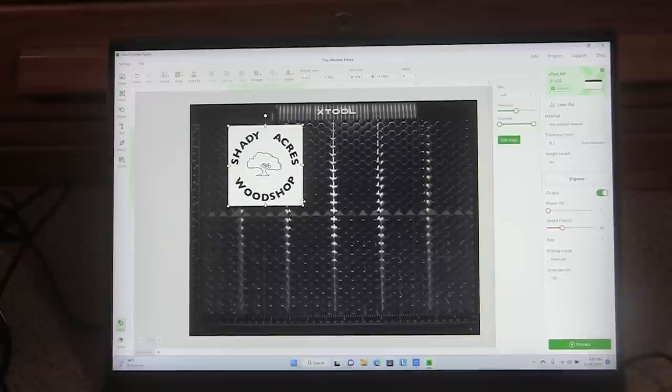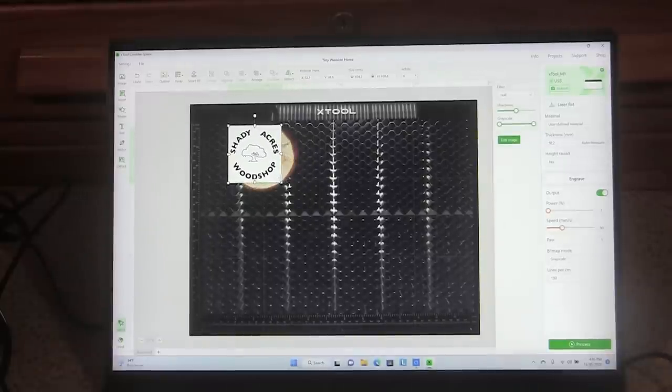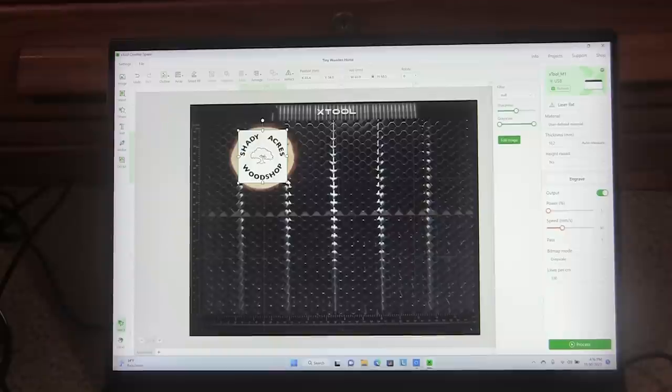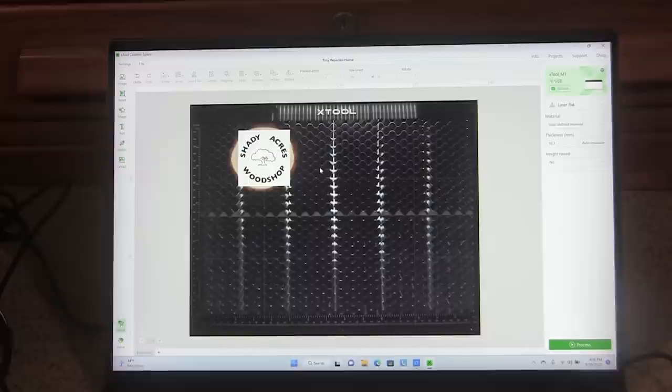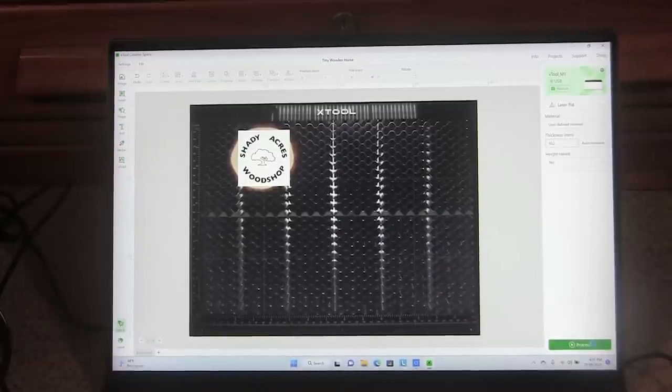It's still too big. I think we can go a little bit bigger than that. It's not the square we want to fit, it's the words, and they're round like the coaster. Okay, I think that might work. I've already auto-measured the piece. Over here, it's 10.2 millimeters. I'm going to click Process.